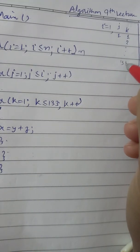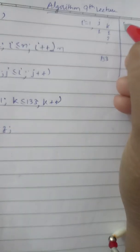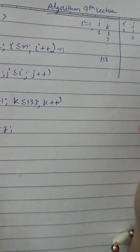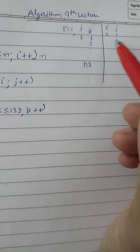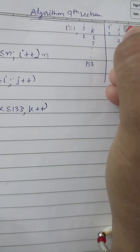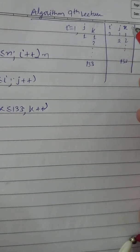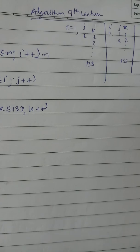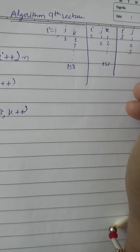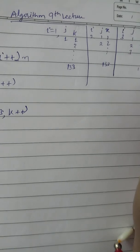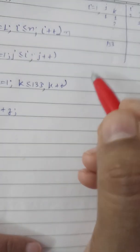When i equals 1, k runs 1 times 133. When i equals 2, j runs 2 times because j starts at 1 and runs while j less than or equals to i. So k runs 2 times 133. When i equals 3, j runs 3 times and k runs 3 times 133.